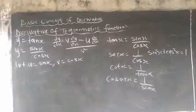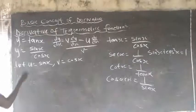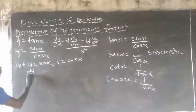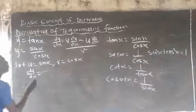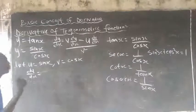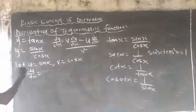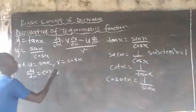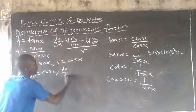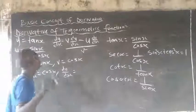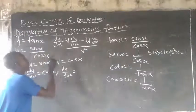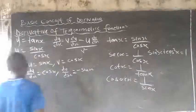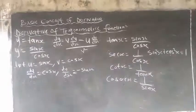I'll differentiate u with respect to s, and differentiate v with respect to s. So du/ds is nothing but cos s — as shown in our previous video, the derivative of sin s is cos s. And dv/ds equals minus sin s — the derivative of cos s is minus sin s, as shown in the previous video.